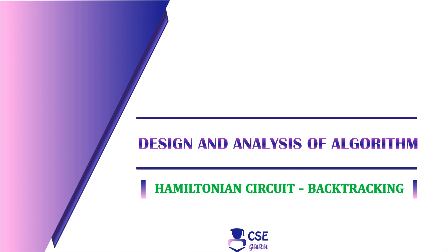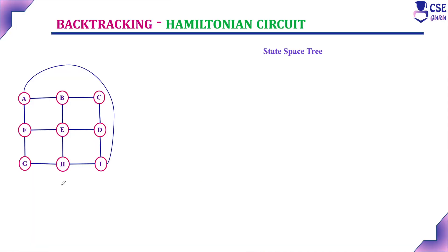Welcome to CSE Guru. In this session, we will discuss the next example to implement Hamiltonian circuit using backtracking technique. A Hamiltonian circuit starts from one starting vertex, considered as the initial vertex, visits all other vertices in the given graph exactly only once, and returns back to the starting vertex.